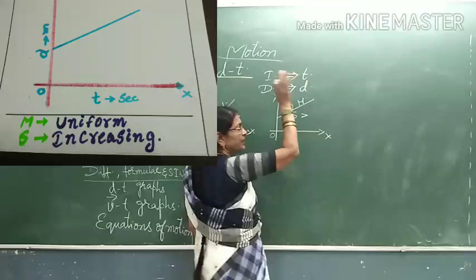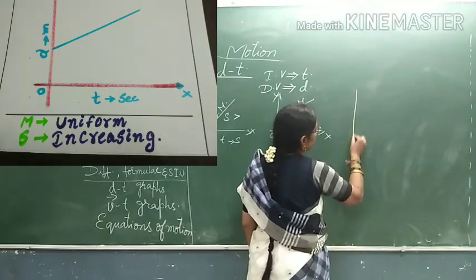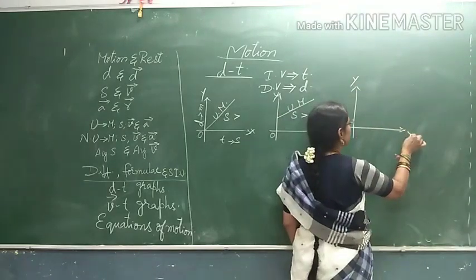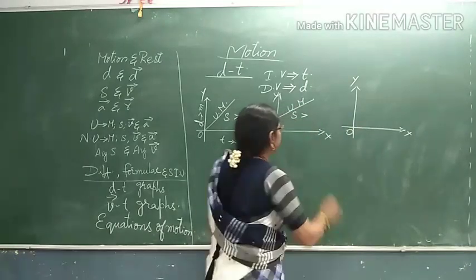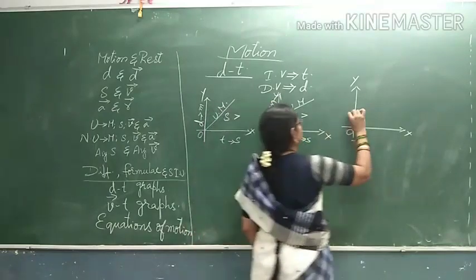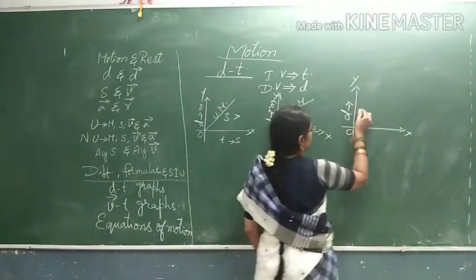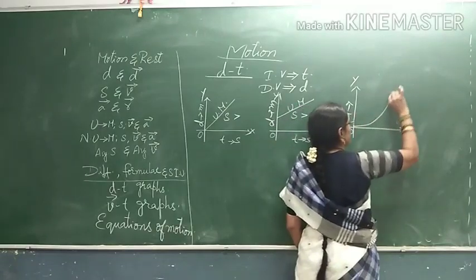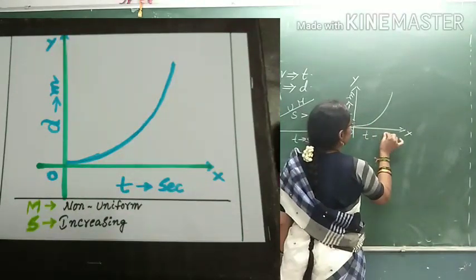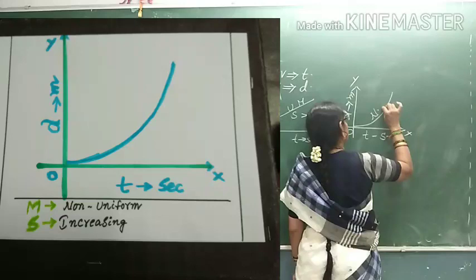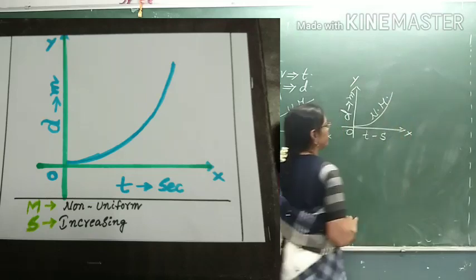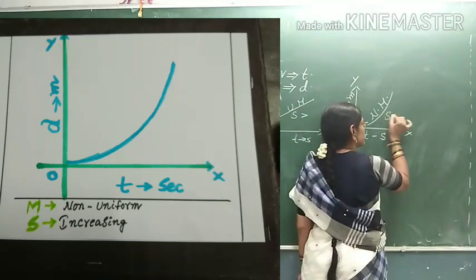And because the slope is going up, speed is increasing. In the next graph — what you observe — this is time on x-axis and distance on y-axis. In the third graph, it is a curve. When you get a curve in the graph, it is called as non-uniform motion. But the curve is going up towards the y-axis, so the speed is increasing.